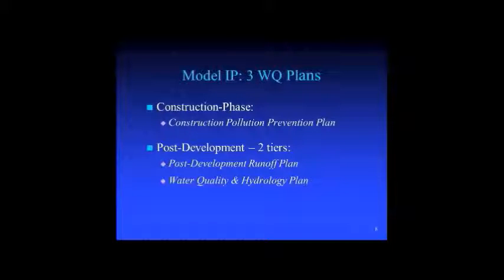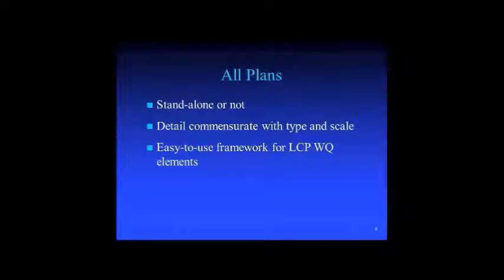In this model implementation plan, we have it organized by three water quality plans. The first is the construction phase plan, which we call the construction pollution prevention plan. For post-development, we have two tiers. One is the post-development runoff plan, which is for all developments. For developments with a higher threat of water quality impacts, there's another tier called the water quality and hydrology plan. We're calling it a plan because it's a group of information — it doesn't necessarily have to be a standalone plan and can be incorporated in application materials.